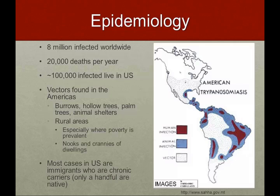Epidemiology-wise, 8 million infected worldwide, about 20,000 deaths per year. About 100,000 of the 8 million are actually living in the US. On the map to the right, you can see with the dotted line where the vectors are found — mostly the southern half of North America, up to the southern part of Argentina and Chile. These vectors in the Americas are usually found in burrows, hollow trees, palm trees, or animal shelters for non-human transmission. However, in rural areas, they live in the nooks and crannies of dwellings, especially subpar living situations where poverty is prevalent. Most of the cases in the US are immigrants who have come to the United States and are chronic carriers. You can count on two hands how many have actually been infected in the US.